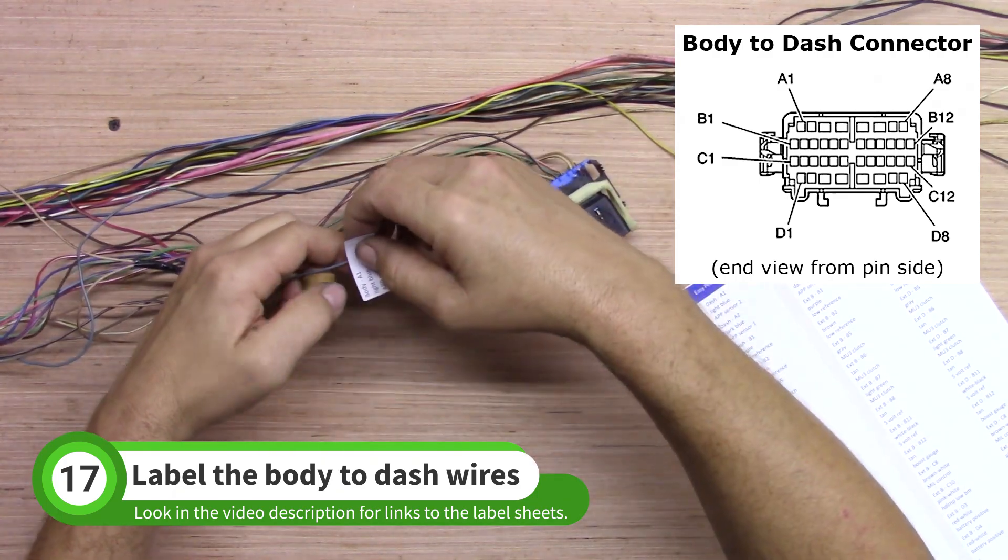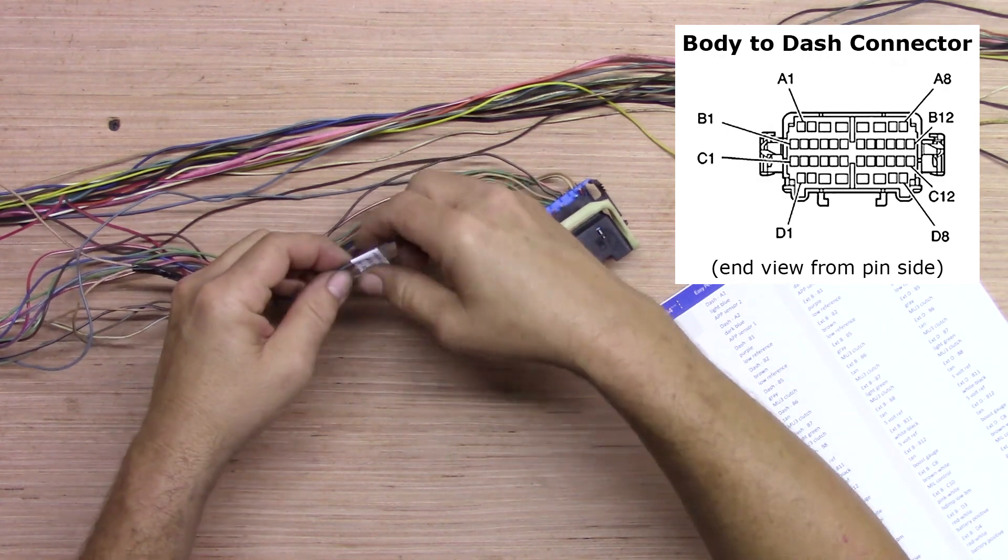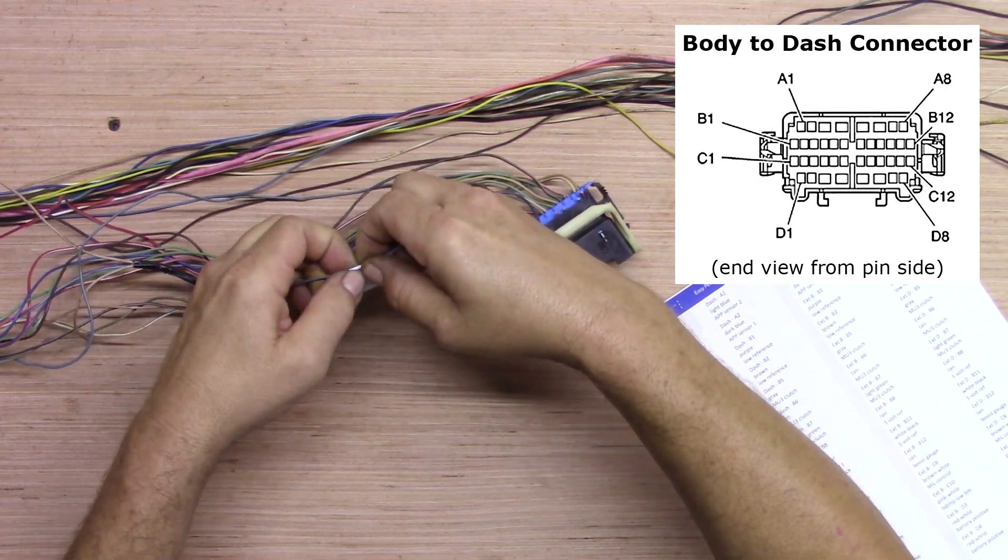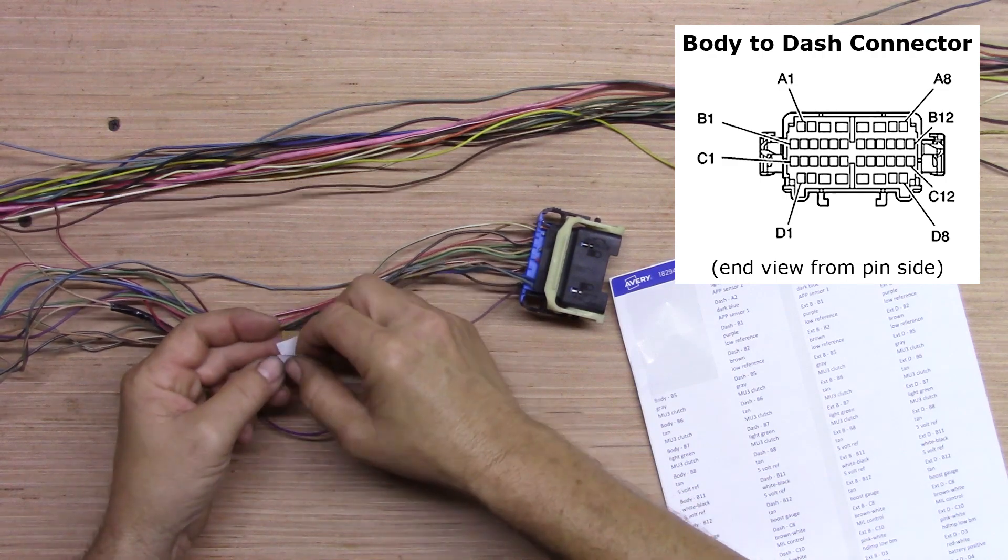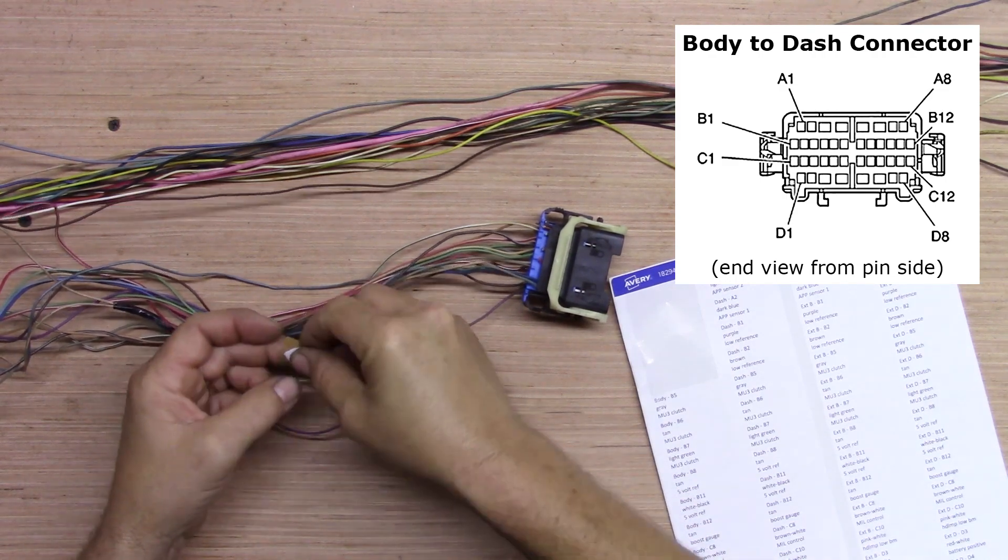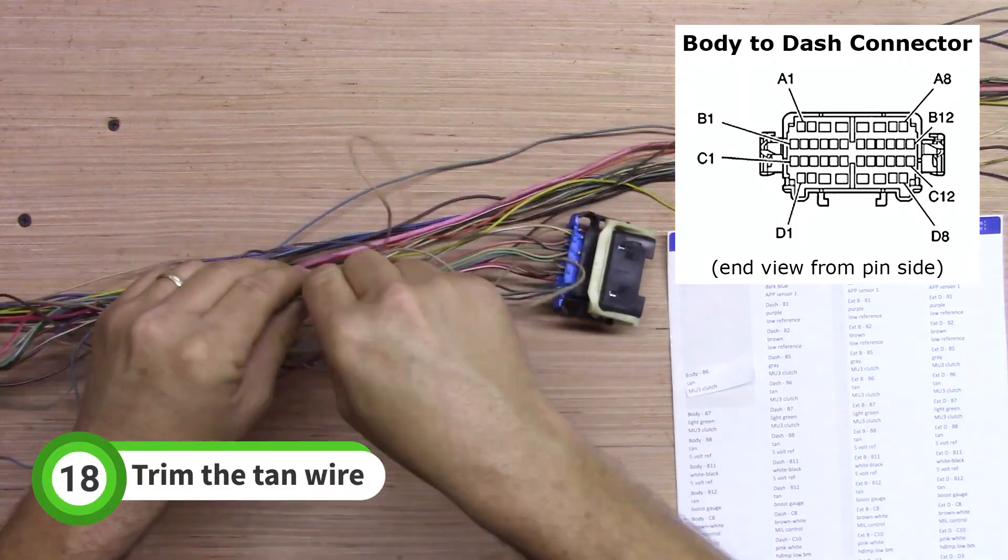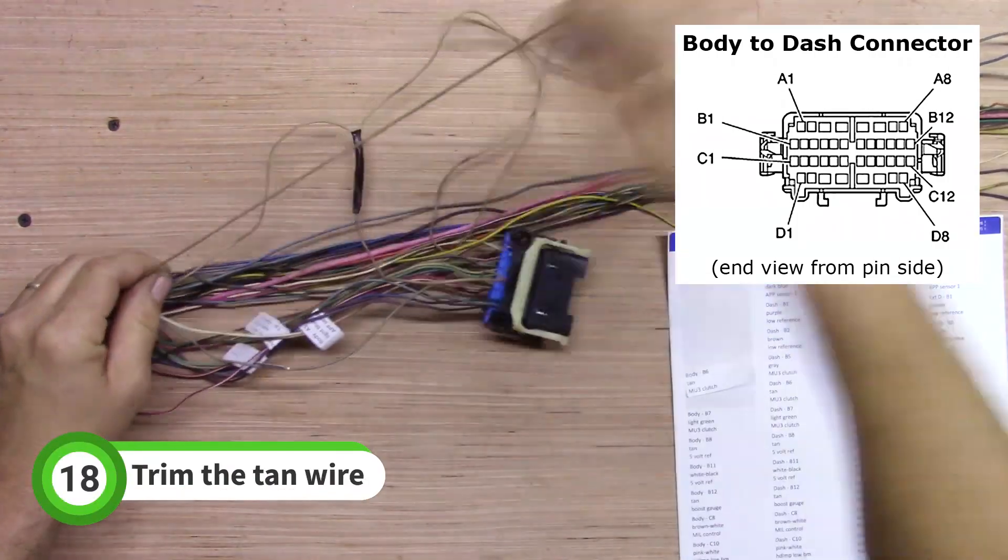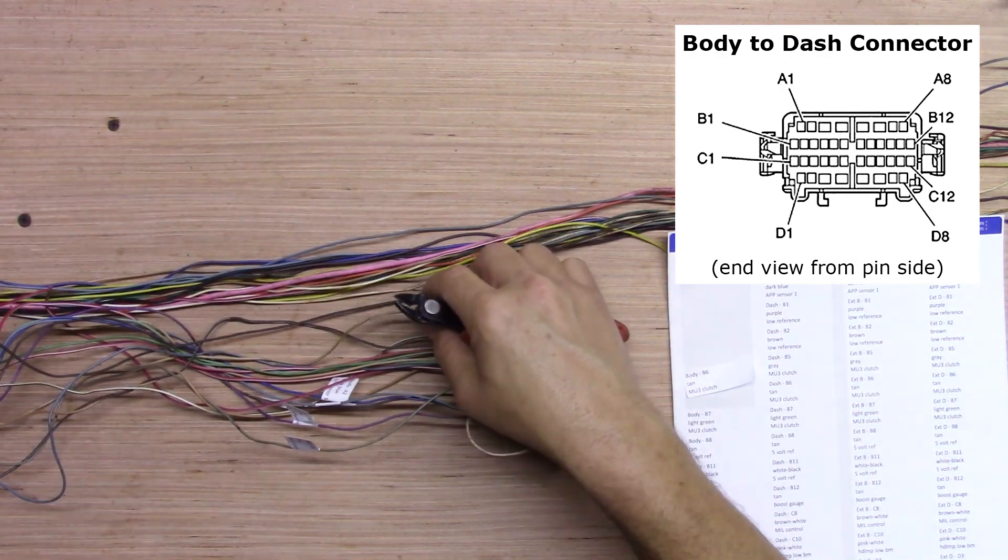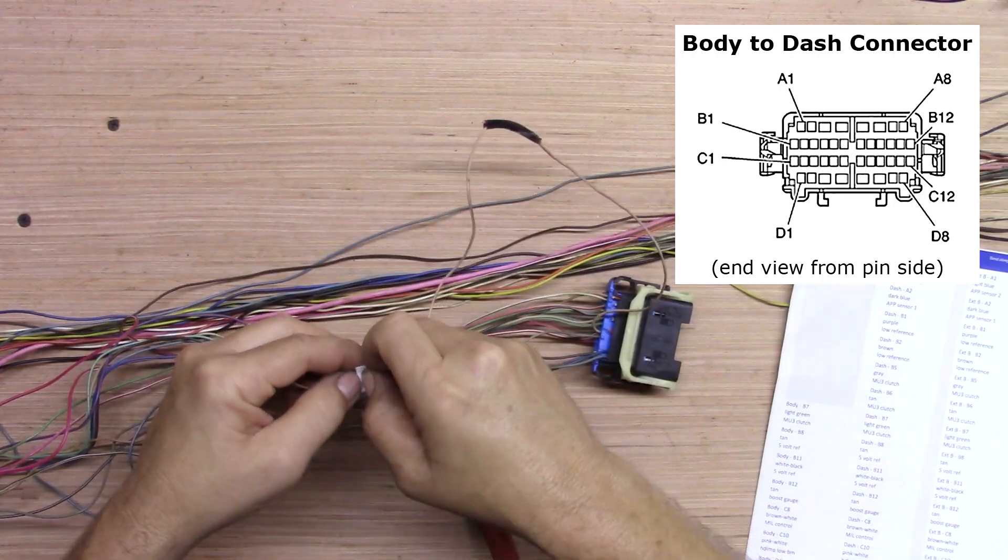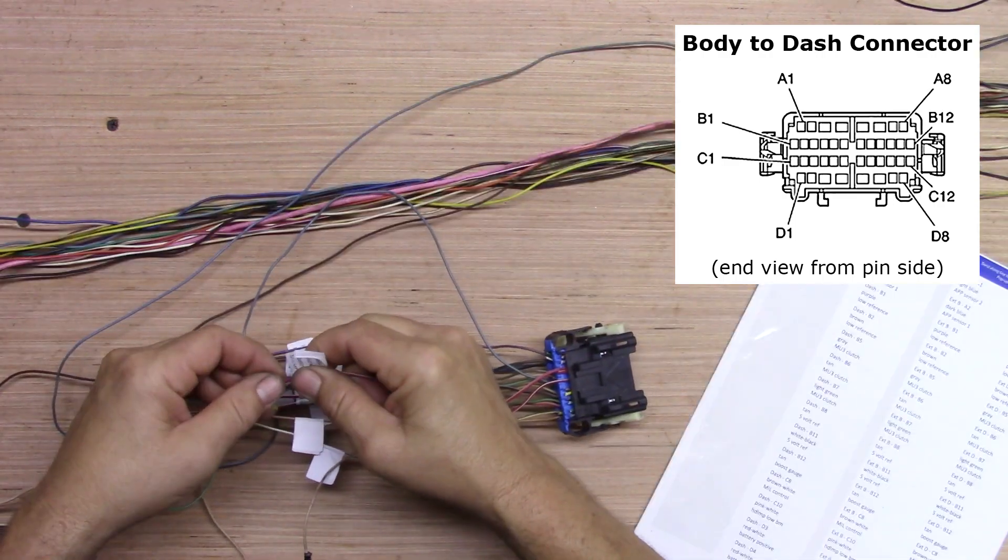One at a time, find the wire that matches each label and securely stick the label to the wire. One wire will have a taped union. Pull the loose wire from this taped union, cut it out and discard it. Mark the other wire with the label. Continue until the column of labels are all applied.